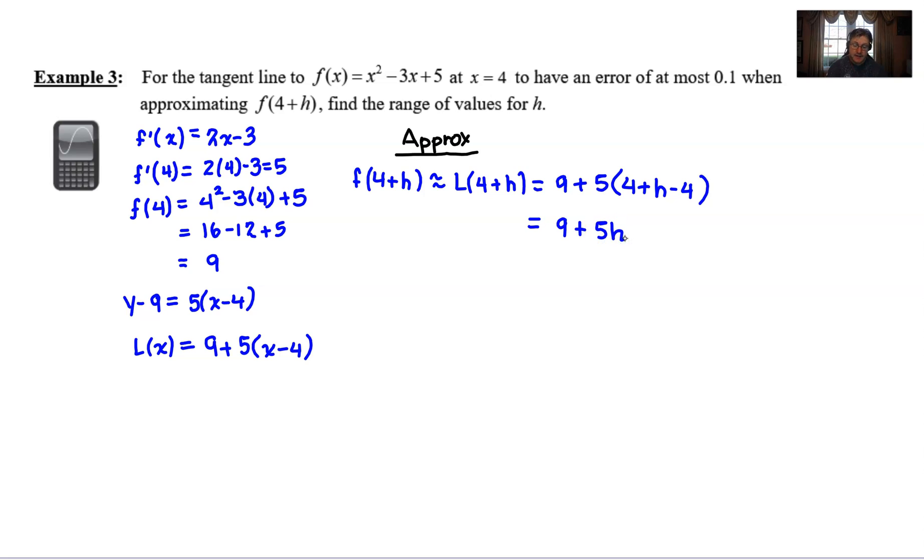And really, the 4s cancel, and that's really about all we can do. 9 + 5h would be our approximation.